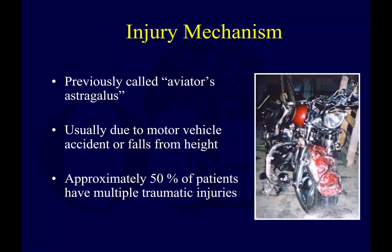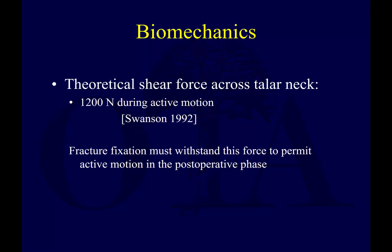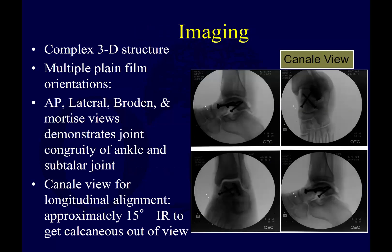The old term for this injury is the aviator's astragalus; nowadays it is usually seen from motor vehicle crashes or falls from heights. Because of the trauma typically involved, many of these patients also have other traumatic injuries. There can be a tremendous amount of force shearing across the talar neck, and when thinking about fracture fixation, you have to counteract that force to ensure stable fixation and appropriate rehabilitation.